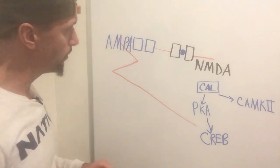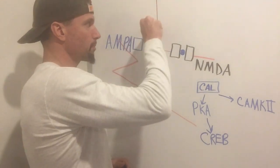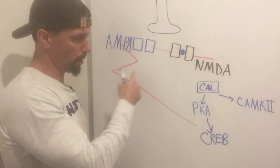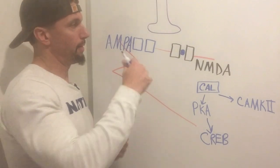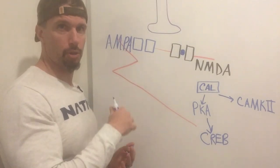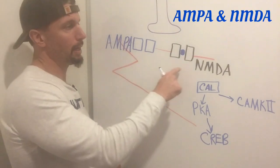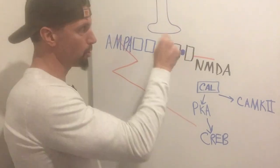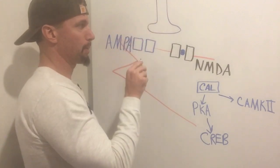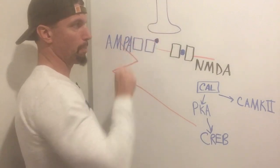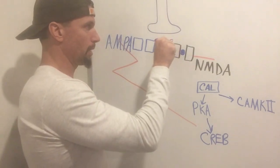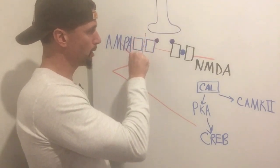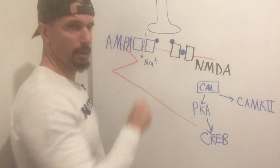Long-term potentiation involves a glutamatergic neuron releasing glutamate. We have a neuron in the hippocampus — the red part represents a dendrite of that neuron, and that's where you find the receptors for glutamate. There are two subtypes: AMPA and NMDA receptors — NMDA stands for N-methyl-D-aspartate. When glutamate is released from the presynaptic neuron, it binds to both of these receptors, allowing a little sodium to enter the cell, partially depolarizing the membrane.